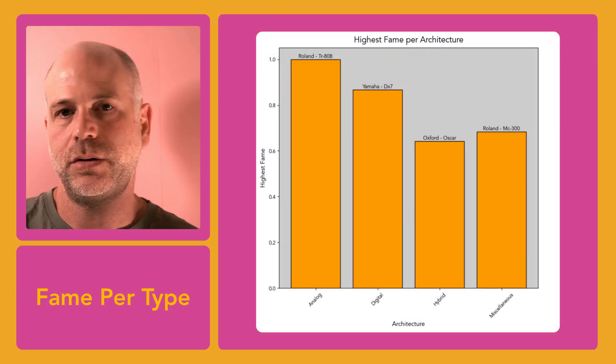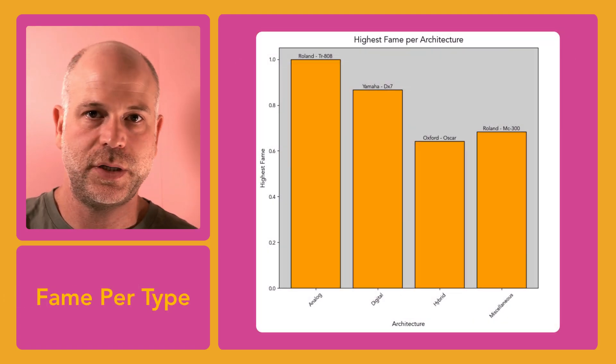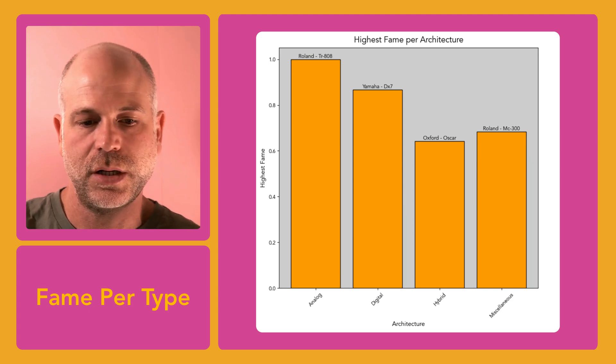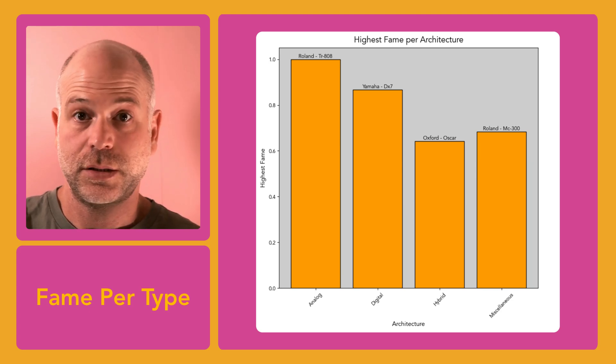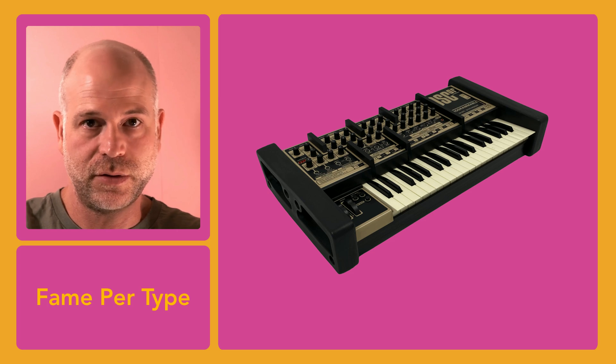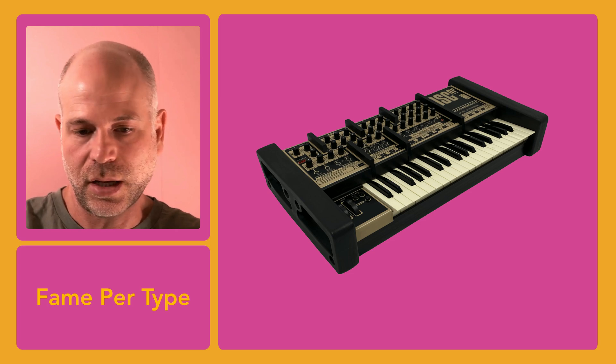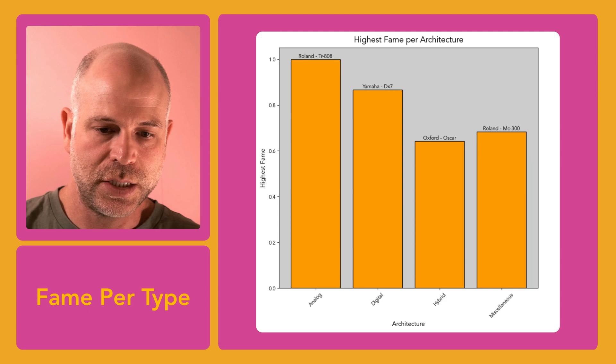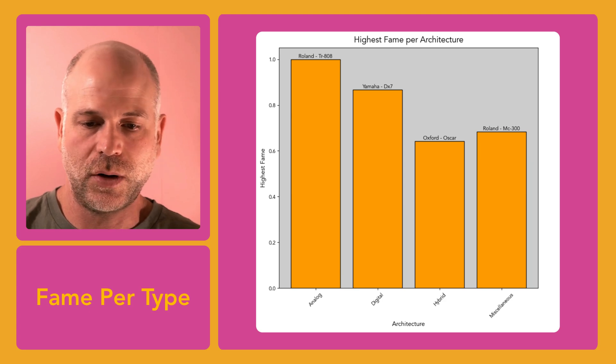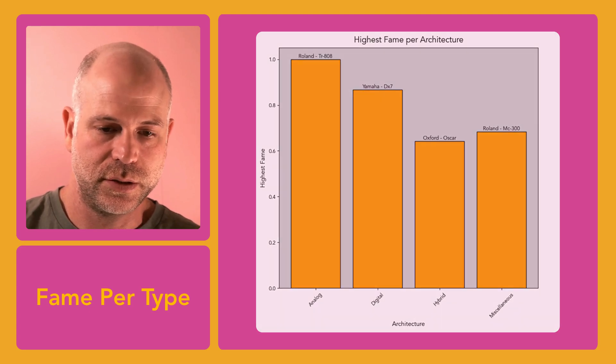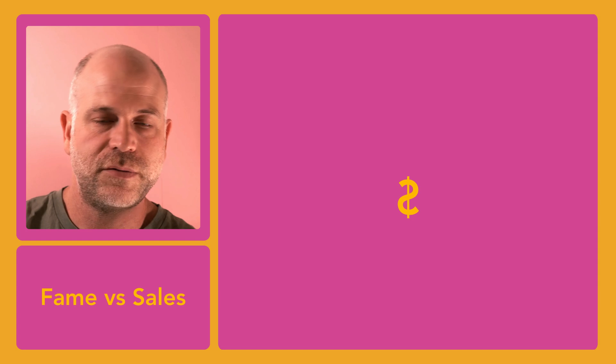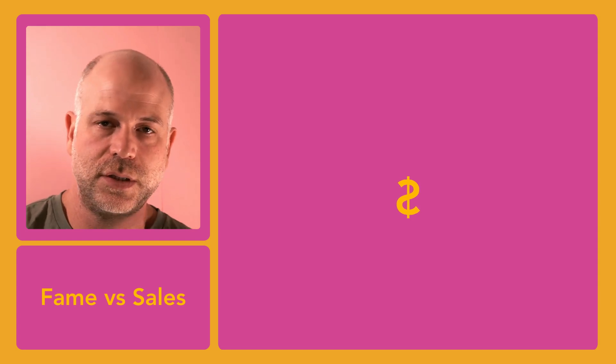If we break fame into architecture types, we see that analog is being led by the TR-808, as we just mentioned. Digital is being led by the DX7. The wonderful Oscar, which is also one of my favorite vintage synths, leading the hybrid section. And the miscellaneous is led by the very quirky Roland MC-300 sequencer. Looking into fame versus actual sales, I first want to mention that fame should not be confused with popularity in terms of sales. In fact, I would probably argue that synths released in smaller quantities and that are harder to get often obtain more of a cult status, actually.